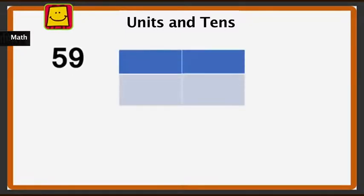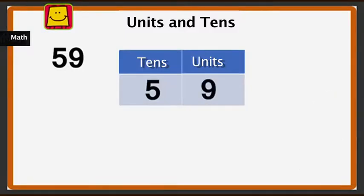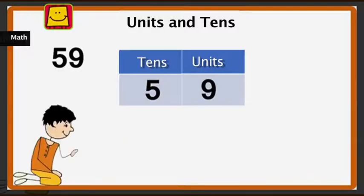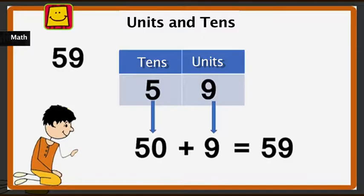Now what number is this? Let us break it up into units and tens. There is 5 in the tens place and 9 in the units place. What does 5 tens mean? 2 tens was 20, 3 tens was 30, 4 tens was 40, so 5 tens will be 50. And 9 units. On adding 50 and 9, we get 59.